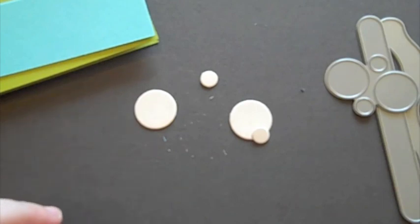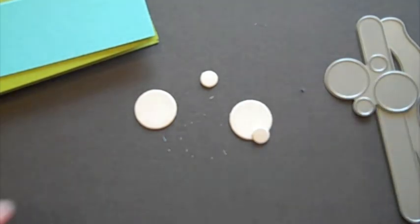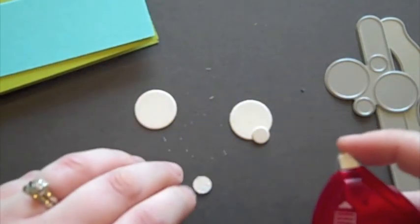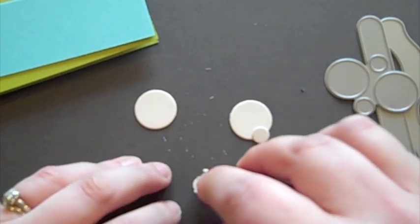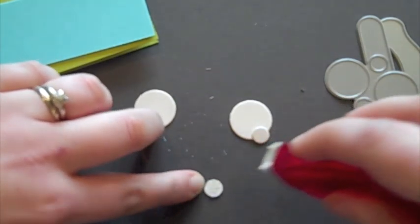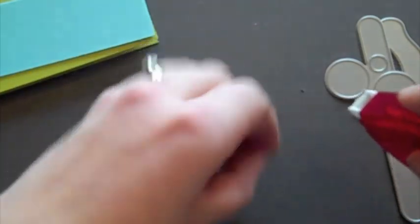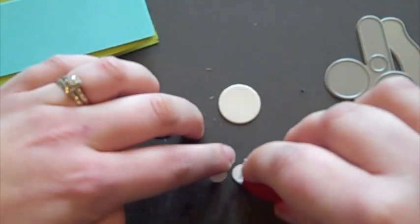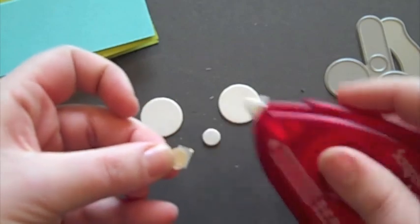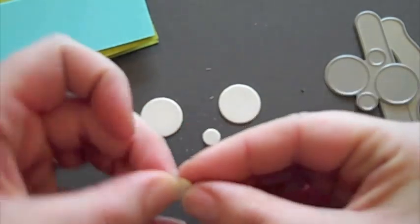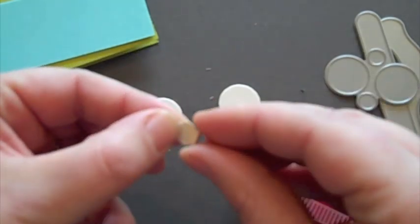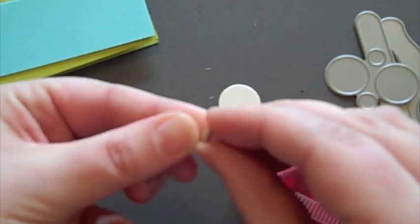And what I'm going to do is adhere these together, and you want to make sure that this is done pretty thoroughly or else stuff can get kind of stuck in the track a little bit. So the first thing I'm going to do is adhere these two small circles together.